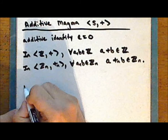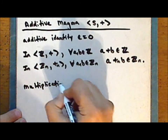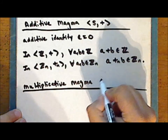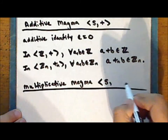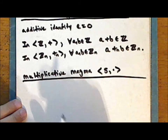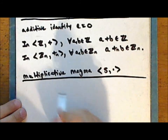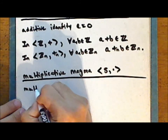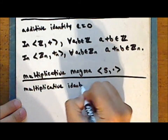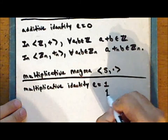The other class is the class of multiplicative magmas. A multiplicative magma consists of a set S closed under a binary operation where that operation is some notion of multiplication. For a multiplicative magma, we tend to call the identity element the multiplicative identity, and we tend to denote it with the symbol one, which we call unity.